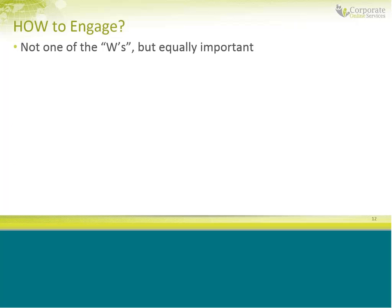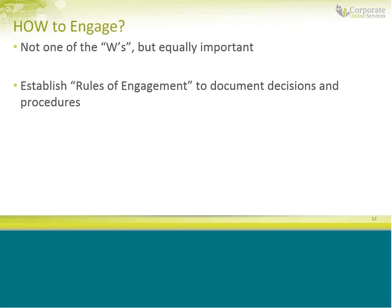Let's talk about how to engage — the H. You need to establish a rules of engagement to document any decisions, policies, and procedures. This should be a living document. Over time you'll have changes to your strategy or engagement, and those need to be documented. Think of it this way: if a new person joins the team with good communication skills and product knowledge, how do they know what's acceptable and what's not? They go to the rules of engagement. It's the master guide to how you are going to engage, and it needs to be updated all the time.